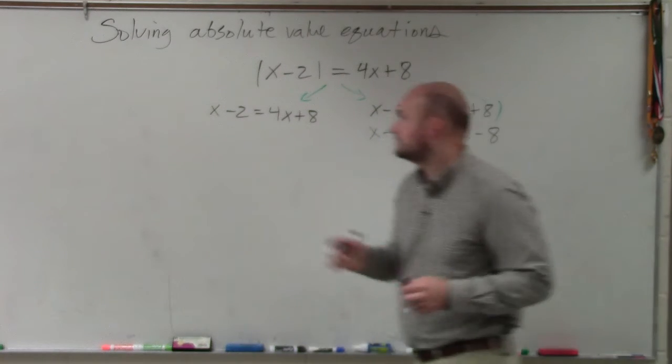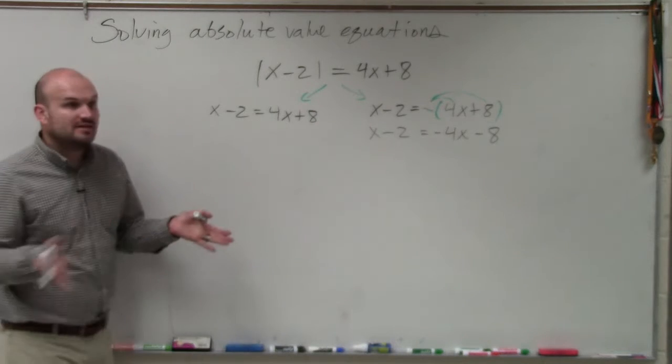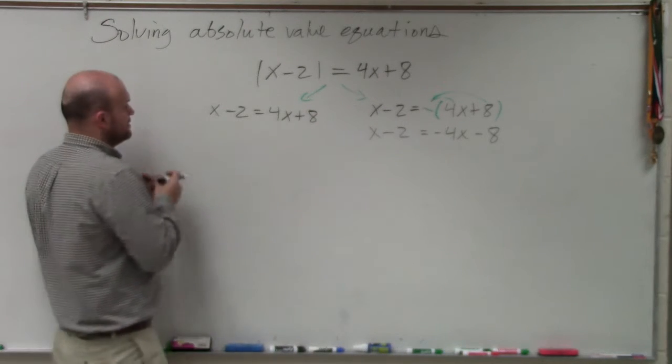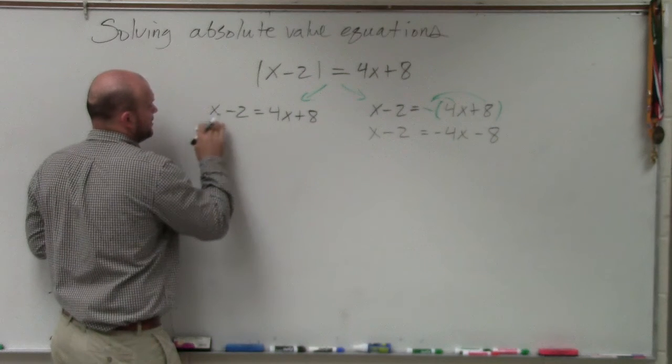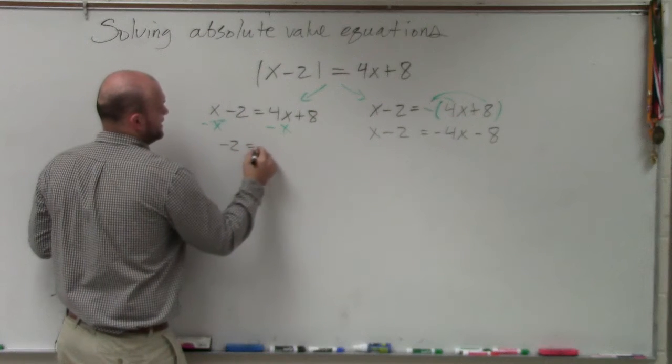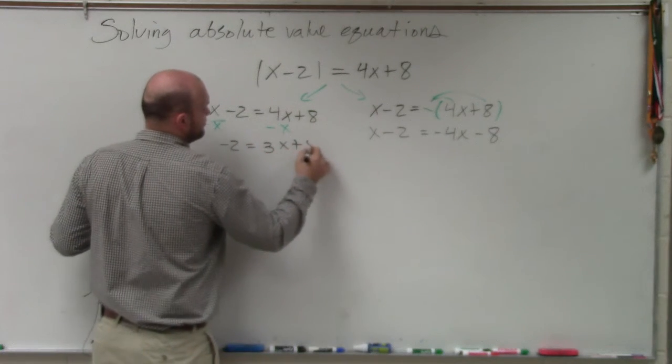Well, now we can go ahead and solve both of them. So again, we want to get the variable to the same side, right? Use it to make it positive. So I'm going to solve for the variable on the right side in this example. So this one, I'll have negative 2 equals 3x plus 8.